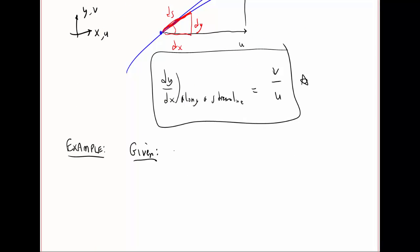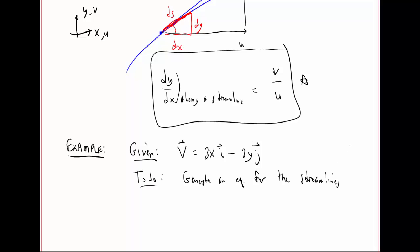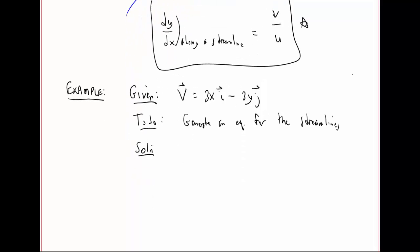Let's do an example. Suppose we're given the velocity vector v = 3x i - 3y j. And we want to generate an equation for the streamlines. Here's how I would solve this problem.